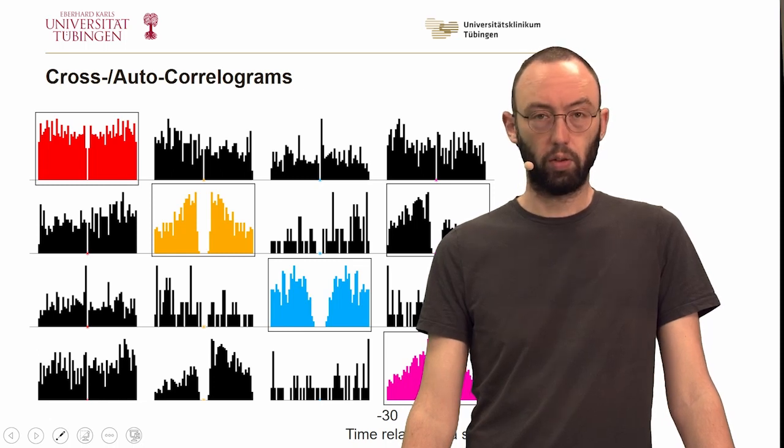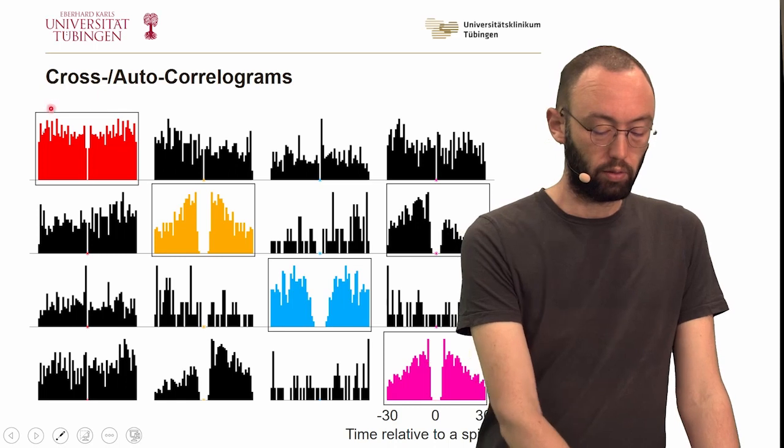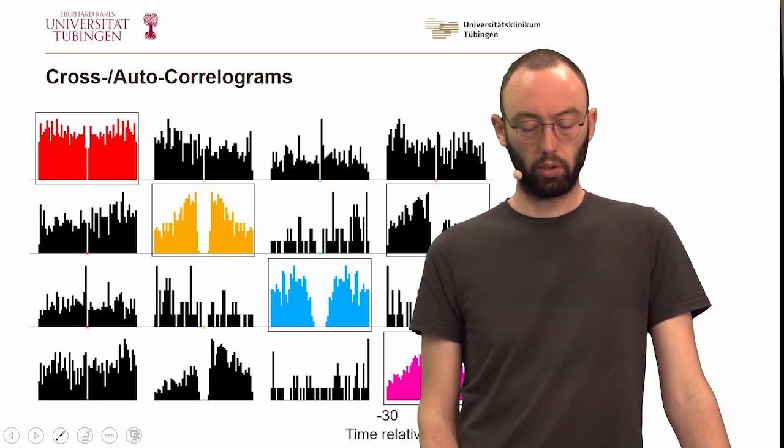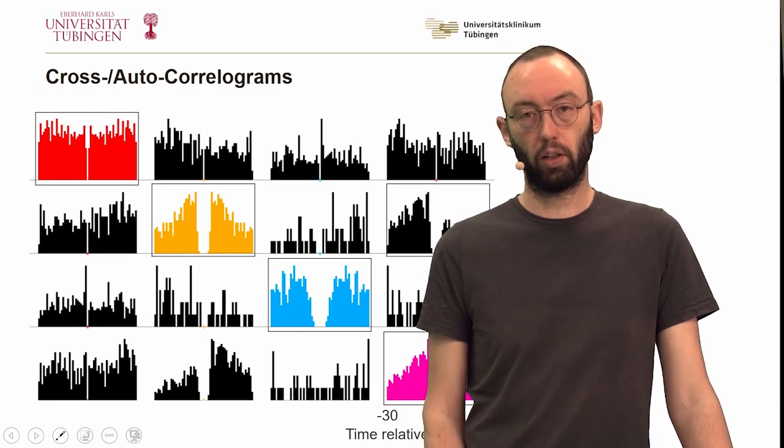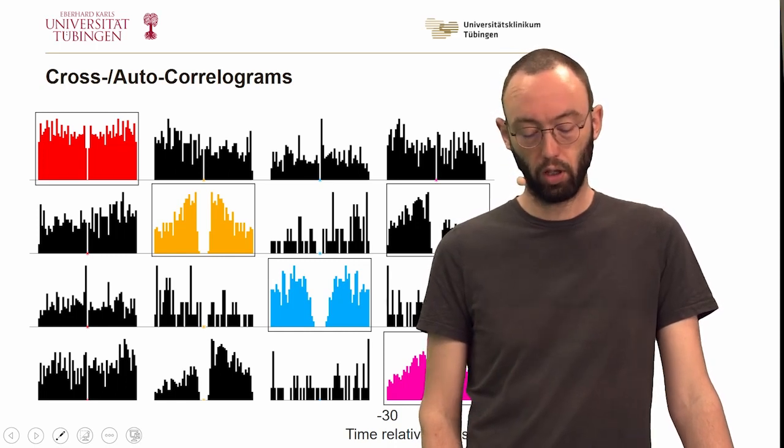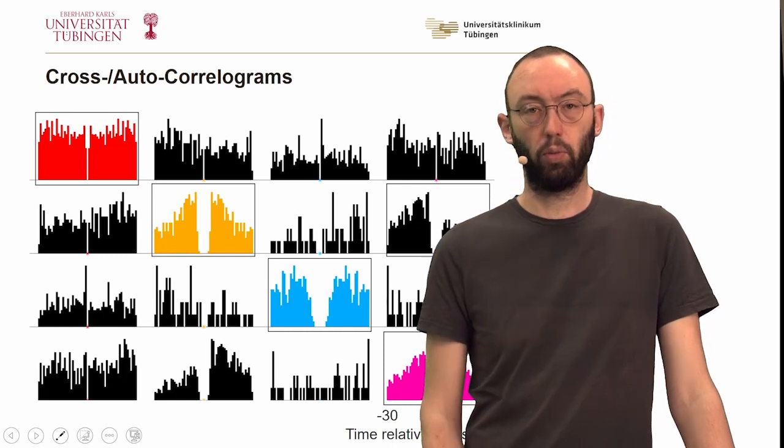So now our summary of the interpretation is that the red cluster is probably a multi-unit cluster, the blue cluster is very likely a single-unit cluster corresponding to an individual neuron, and together the orange and the pink cluster form another neuron.